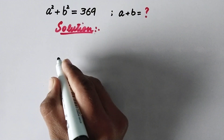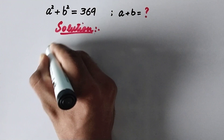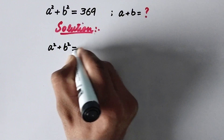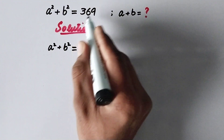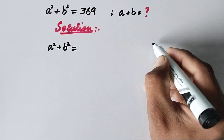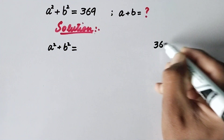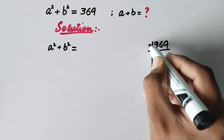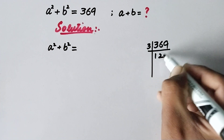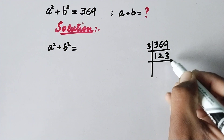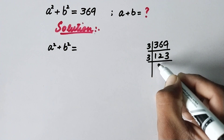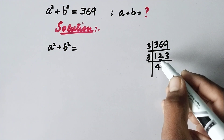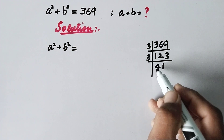In the first step we will write a squared plus b squared is equal to — we will factorize 369. If we divide by 3 it will be 1, 2 and 3; if again divided by 3 then it will be 4, 1. So the factors of 369 are 3 times 3 times 41.